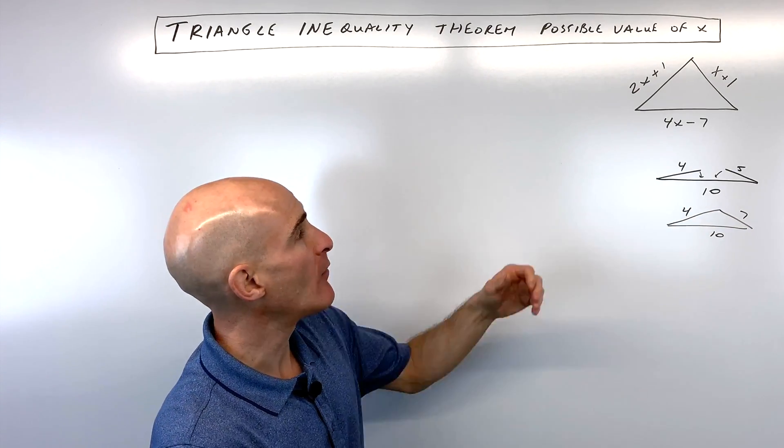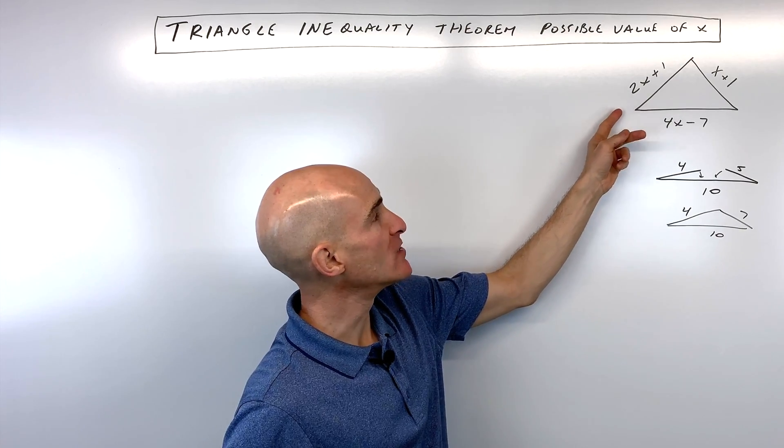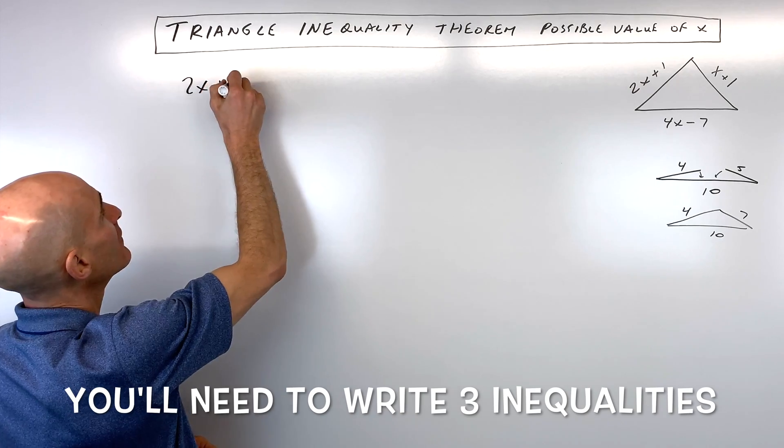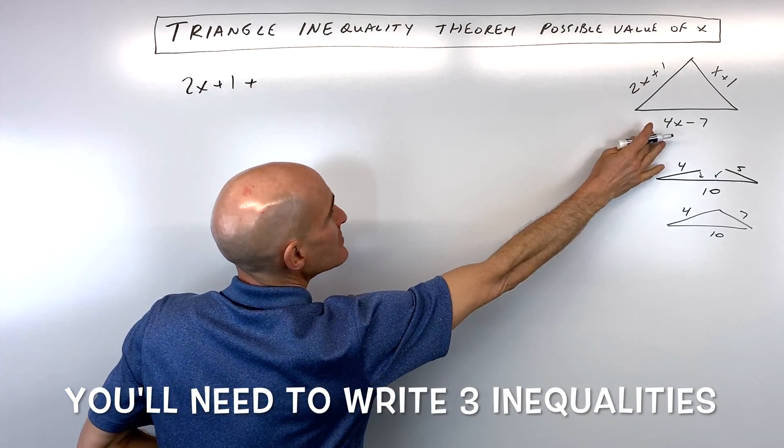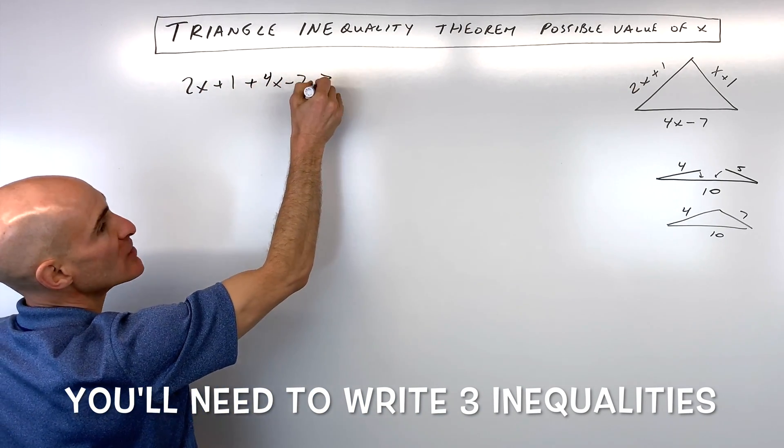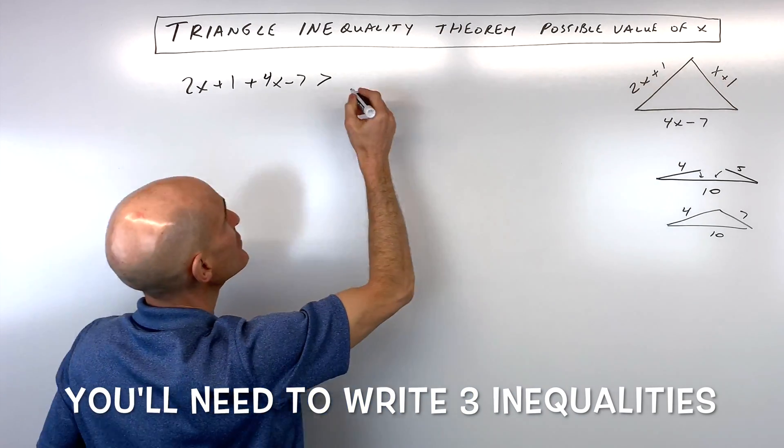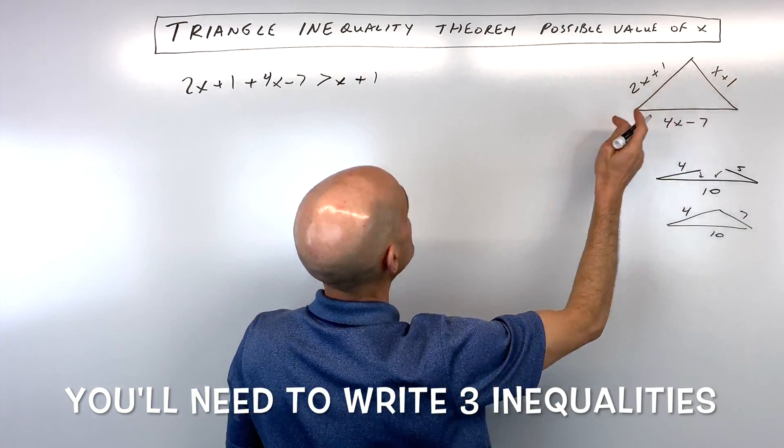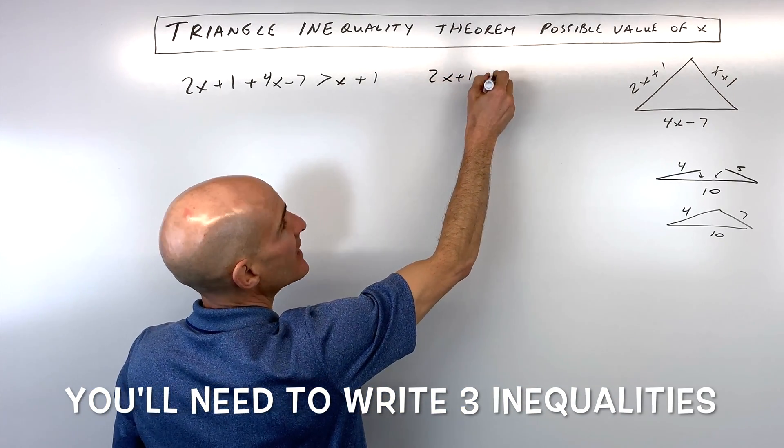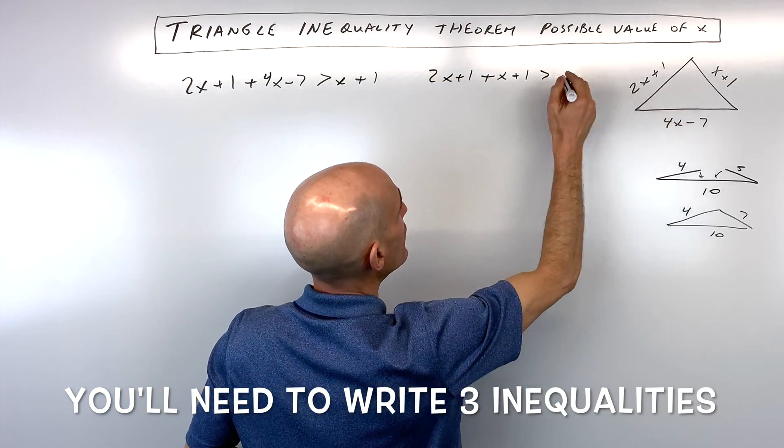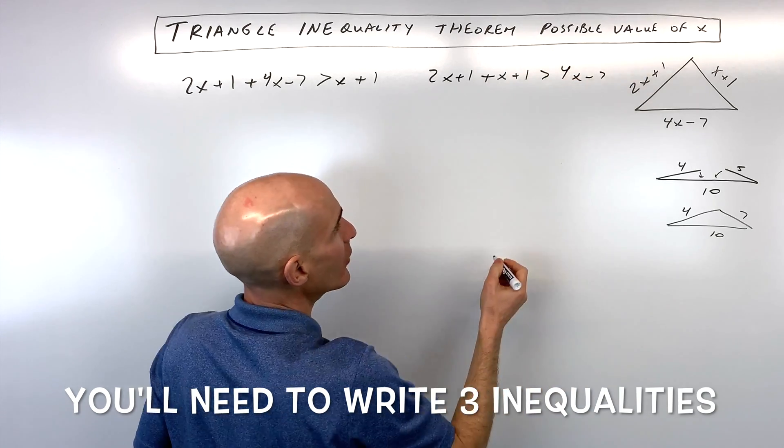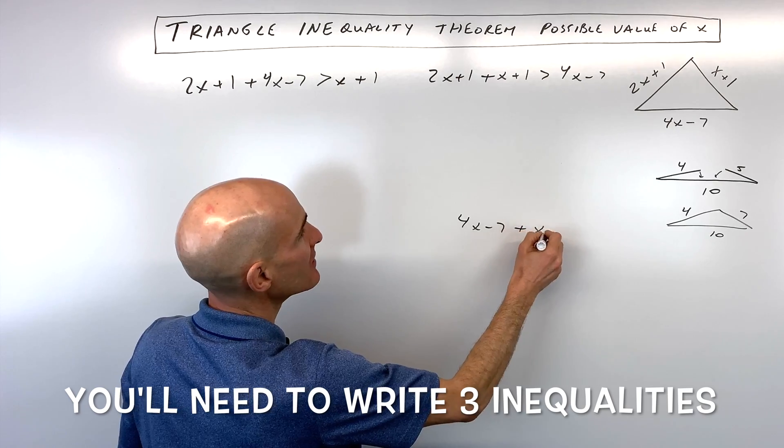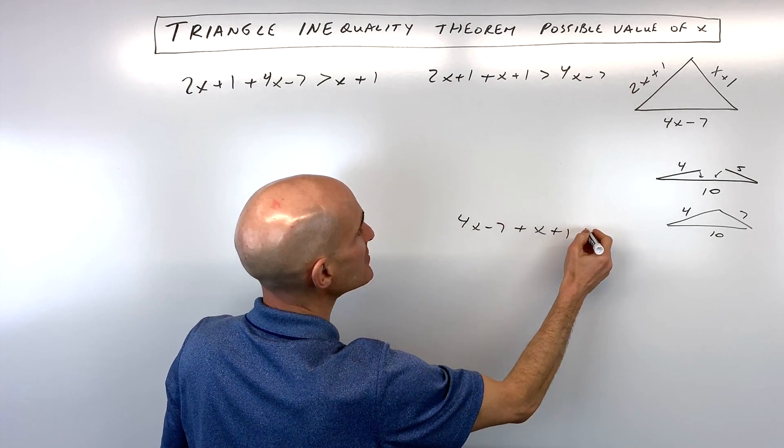So I'll show you how to do this in this problem. What you would do in this algebraic example is you would take any two sides, say for example, 2x+1 plus 4x-7 has to be greater than the third side which is x+1. But we also have to take into account that 2x+1 plus x+1, those two sides have to be greater than 4x-7, and also we have 4x-7 plus x+1 has to be greater than 2x+1.